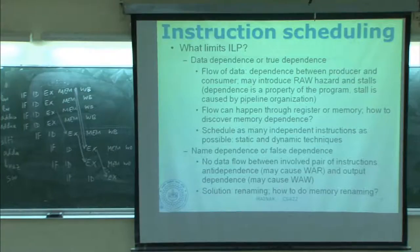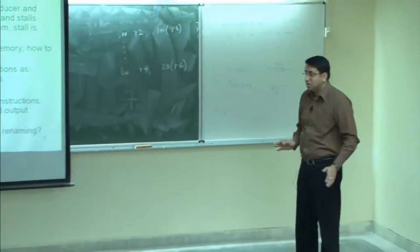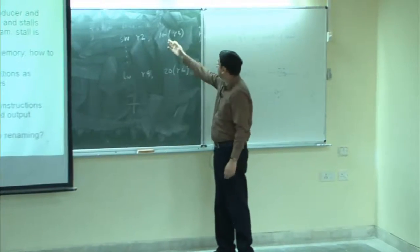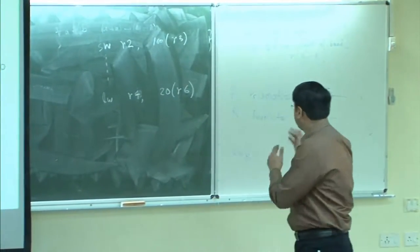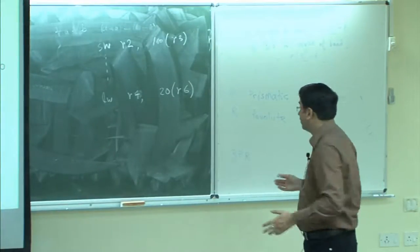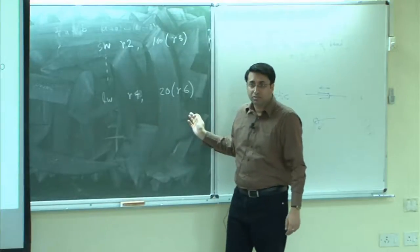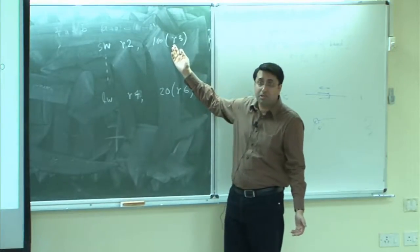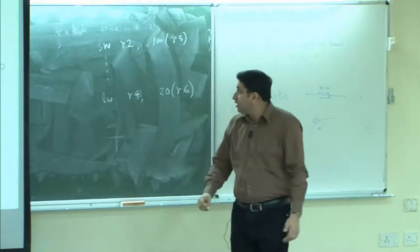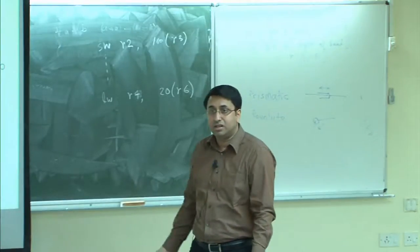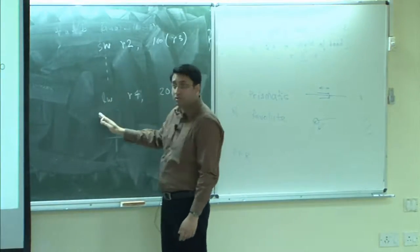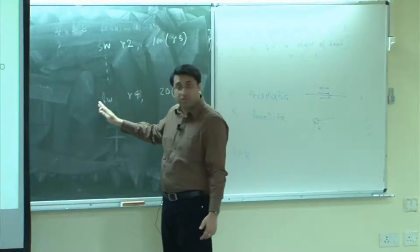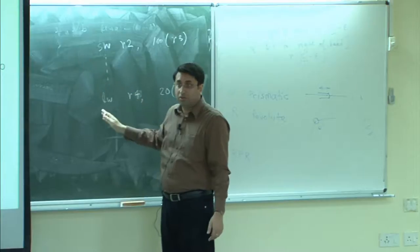The problem is that by looking at these two instructions, there is no way to know they are in a dependence. It is just that the values of R3 and R6 are such that these two addresses turn out to be the same. Nothing stops the compiler from generating this code — in fact the compiler does generate this. So the question is how do you discover that two instructions are in a dependence, because you may execute the load before the store and get a wrong value.